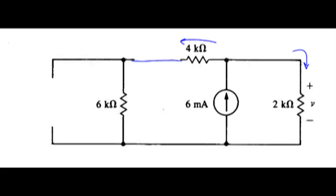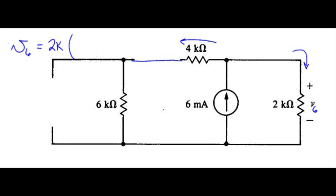Let me jot that down up here. We would then say the voltage due to the 6 milliamp source operating by itself is 2k times the current, which we get again from the current divider relationship, so we'll do 1 over 2k divided by total conductance.